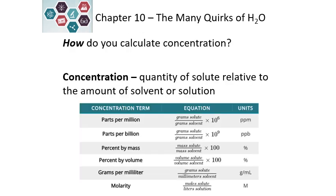When we make a mixture, we need a way to tell how much solute is dissolved into our solvent or our solution. We use something called concentration, which puts a numerical value on the quantity. We can have dilute solutions or concentrated solutions. Concentrated solutions contain a lot more solute than dilute solutions. There are several different ways that we can measure concentration.